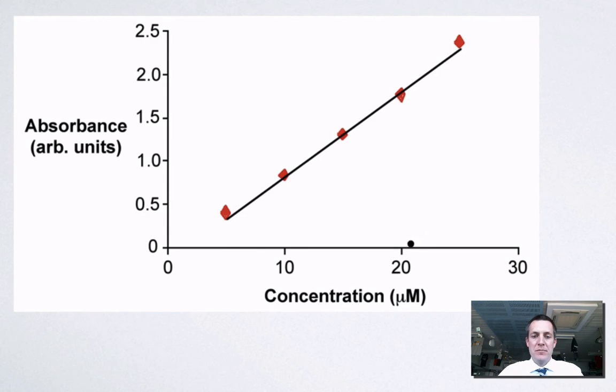We can plot what absorbance we get, in other words how much of the light gets absorbed by this sample at a particular frequency using our machine. We can do that for a number of different concentrations and plot a curve through our points.